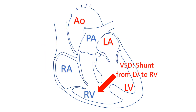In the case of ventricular septal defect, the shunt is from the left ventricle at higher pressure to the right ventricle at lower pressure. Pulmonary blood flow is high in a large VSD with left-to-right shunt. The extra blood flow due to the shunt returns to the left atrium and then to the left ventricle.